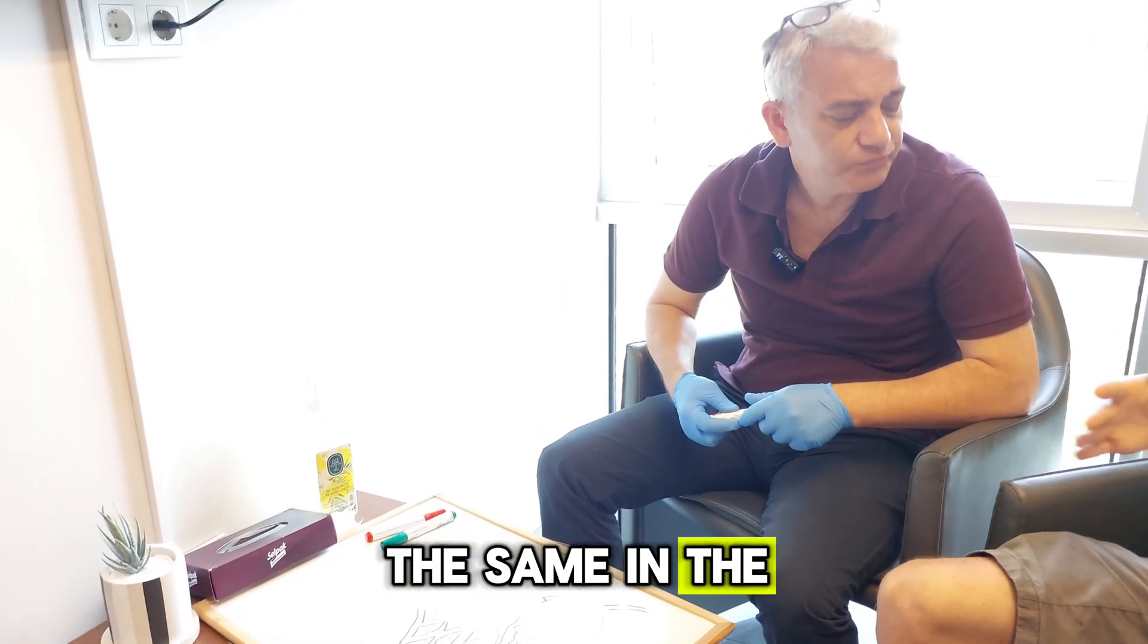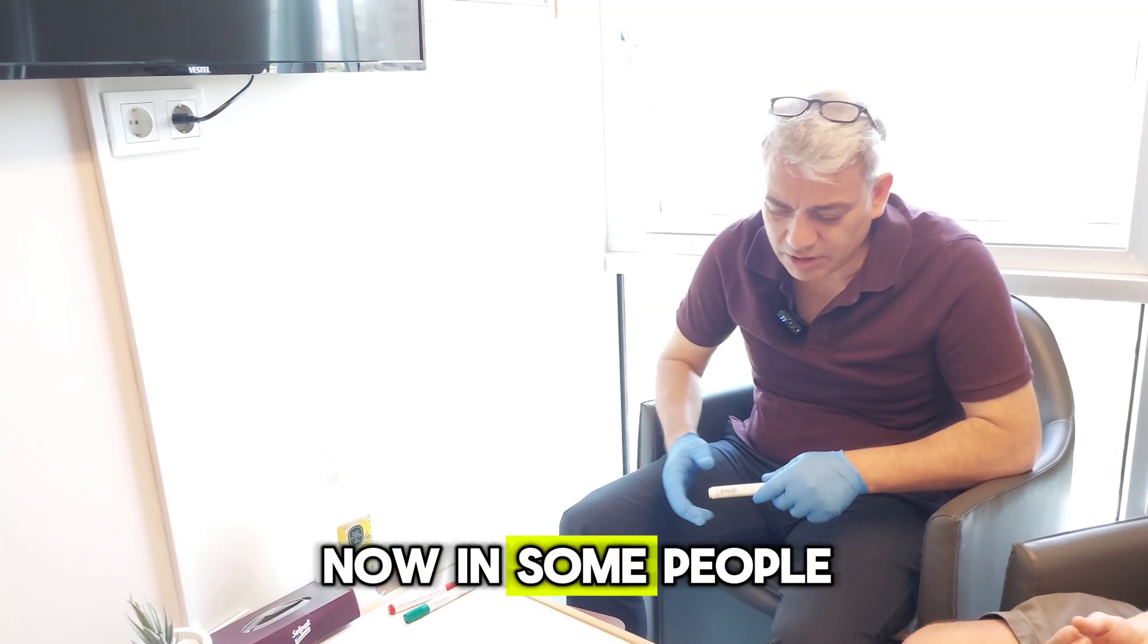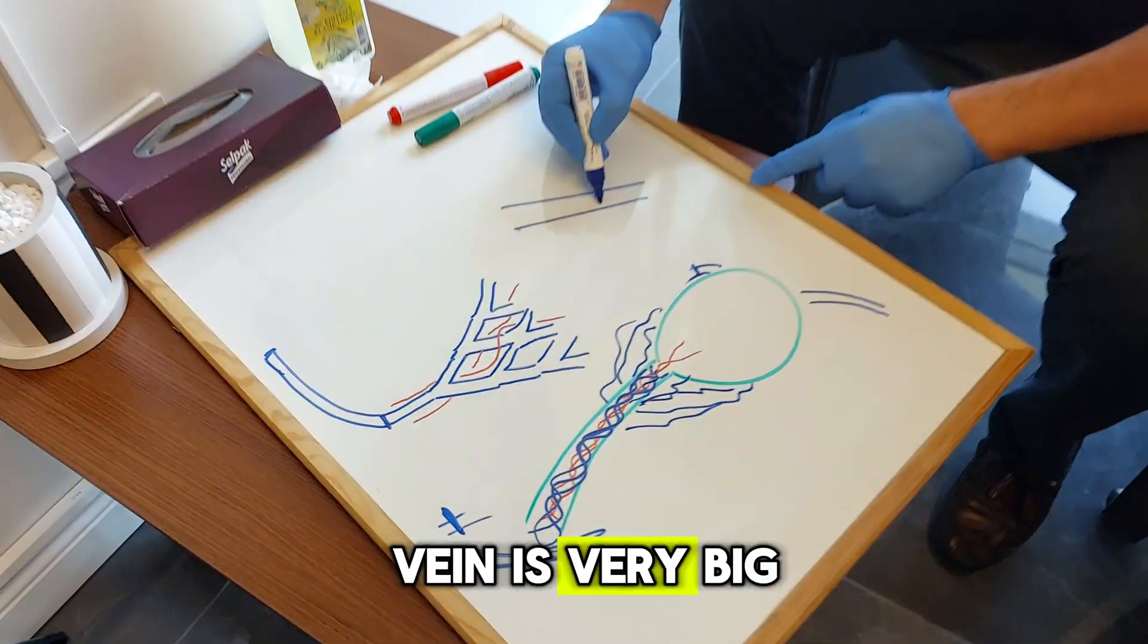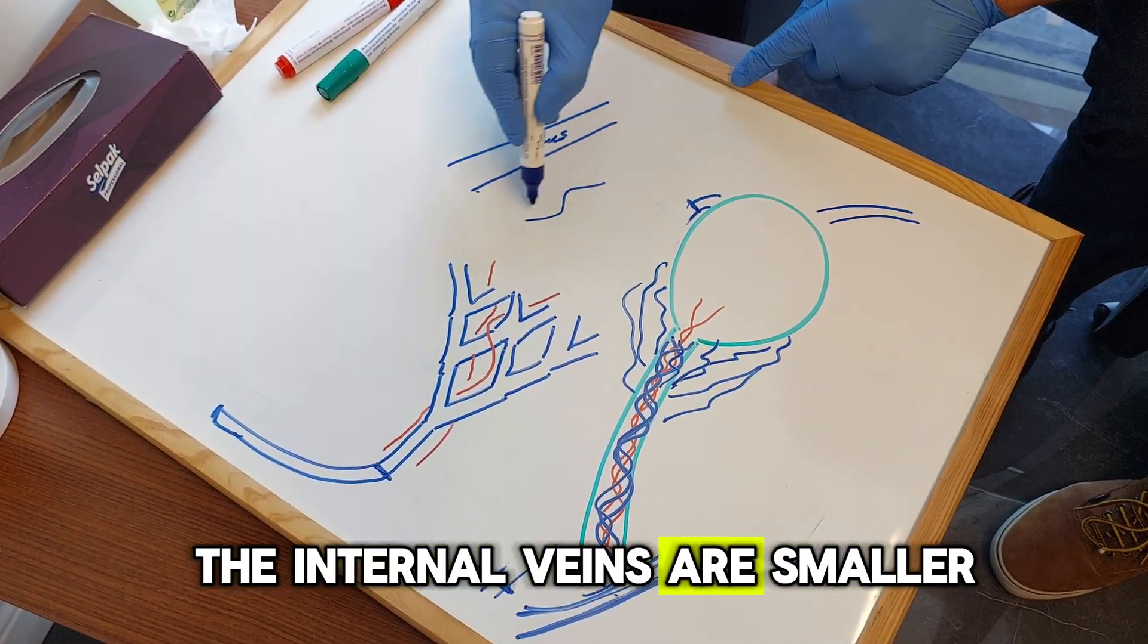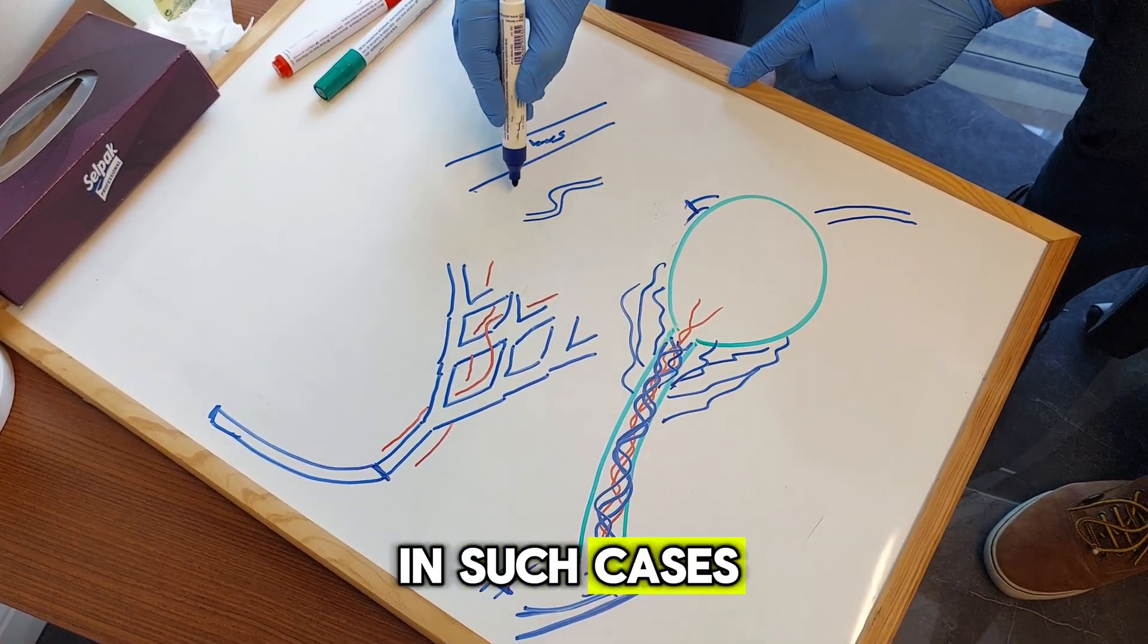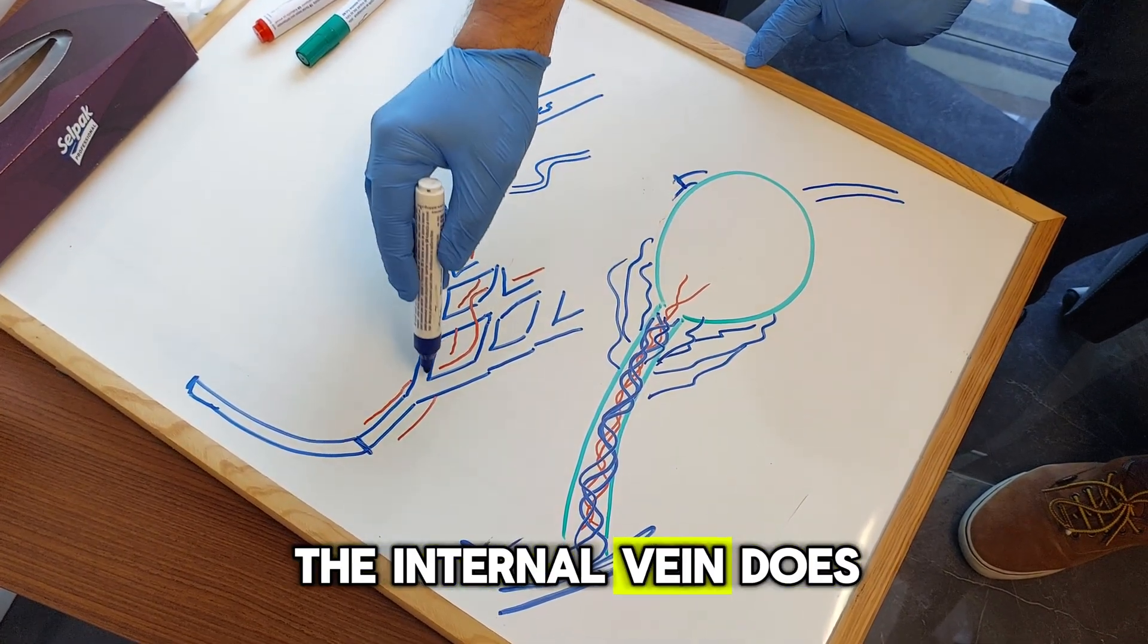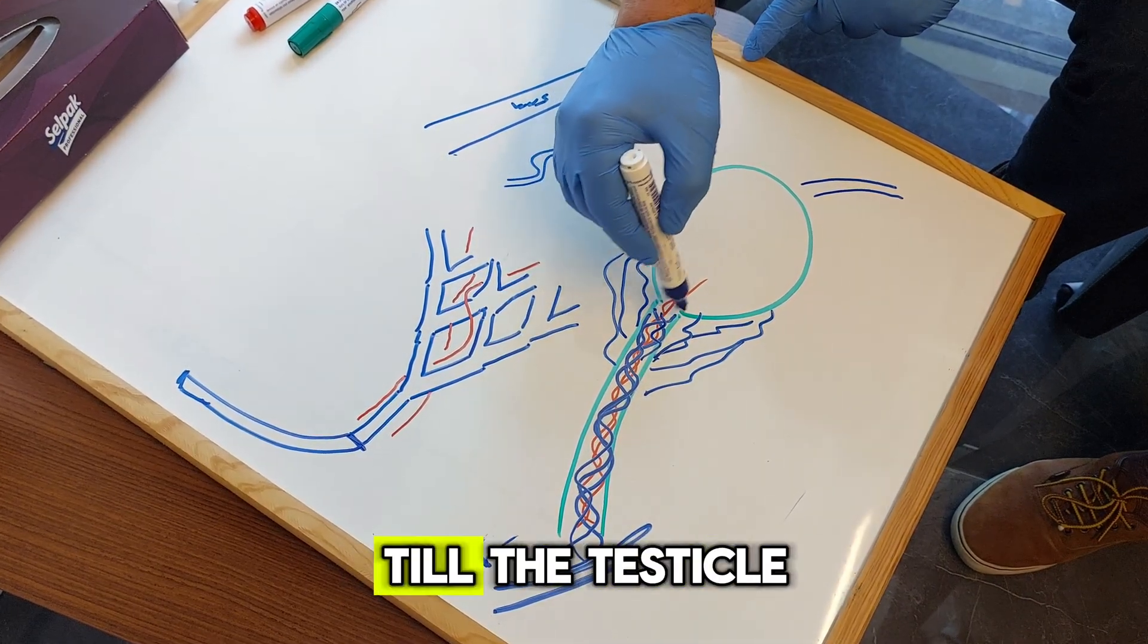Now in some people the external vein, for example, is very big, maybe five millimeters, and the internal veins are smaller. In such cases they will feel nothing. And in some cases the internal vein does not divide into branches until the testicle, it comes as a single branch and we can resect a longer segment.